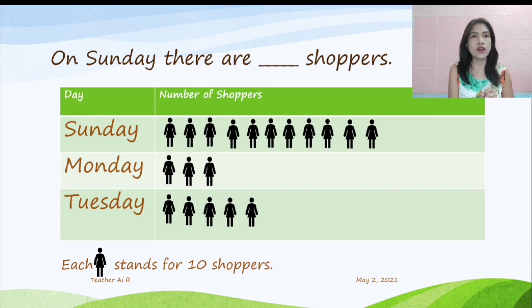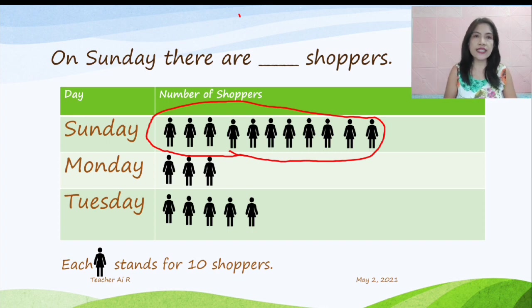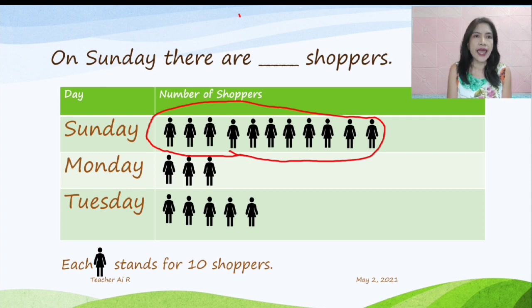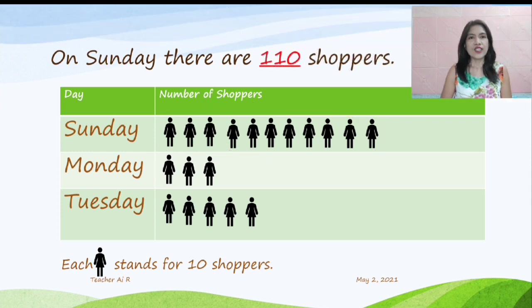These are the pictures that we are going to count. We are going to count the pictures of shoppers on Sunday. So, we have: 10, 20, 30, 40, 50, 60, 70, 80, 90, 100, 110. On Sunday, there are how many shoppers? There are 100 shoppers on Sunday.